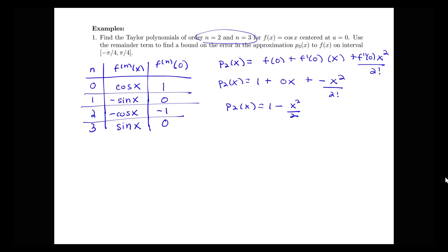So what about my p3 of x? Well, p3 of x will be equal to this 1 minus x squared over 2 plus the third order term, which would be the third derivative evaluated at 0, which happens to be 0 times x cubed over 3 factorial. So it looks like here, my third order Taylor polynomial is actually equal to the second order Taylor polynomial.